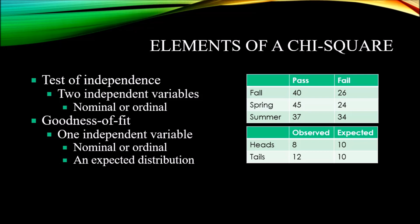For the goodness of fit, we have an expected distribution that's given to us as part of the design, like in this example with a coin toss. For the test of independence, as a part of that process, the expected values for each cell are calculated, and the actual observations are compared to those expected values.